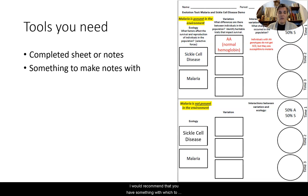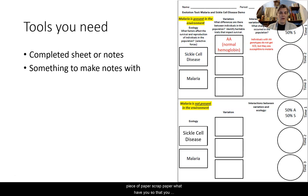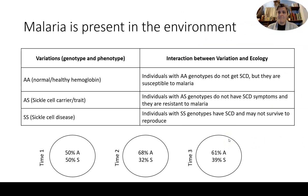I recommend that you have something with which to take notes — a different colored pen or pencil if you're taking notes directly on the evolution tool, or a separate piece of paper or scrap paper — so that you can jot down any questions that you have. Let's take a look at the first ecology.